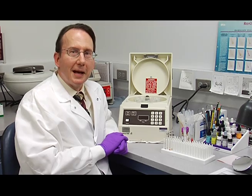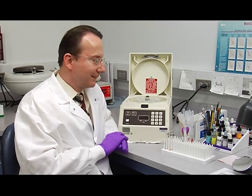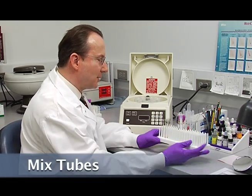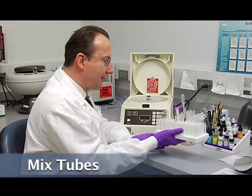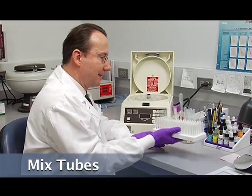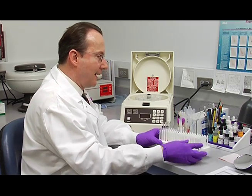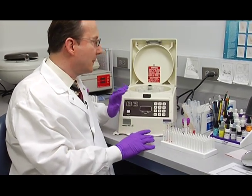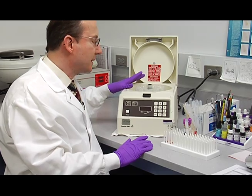Now we're ready to spin down the tubes in the centrifuge. First you need to mix your tubes. You can just shake your rack like this. Then I'm going to show you how to balance an odd number of tubes in the centrifuge.